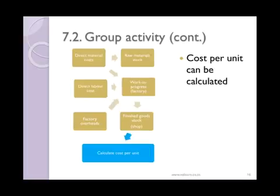Now that you've worked out your finished goods stock value, you can calculate a cost per unit by simply dividing the value of your stock by the number of items that you made.